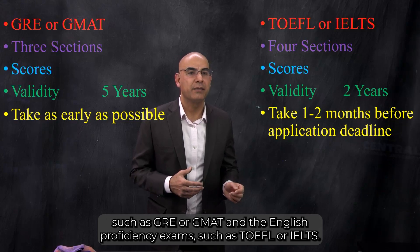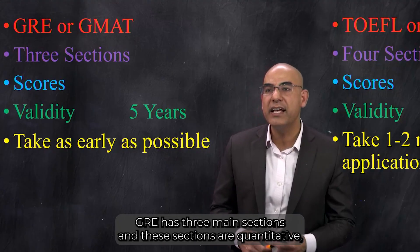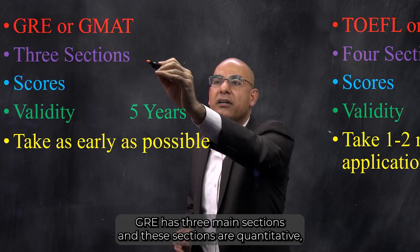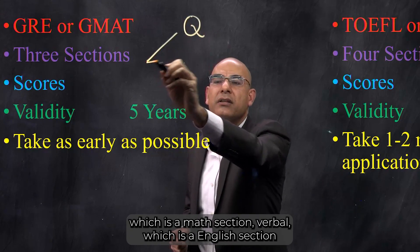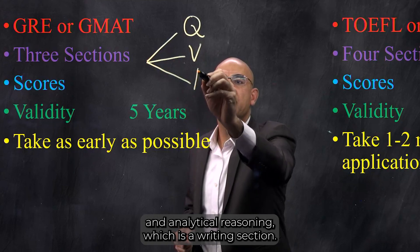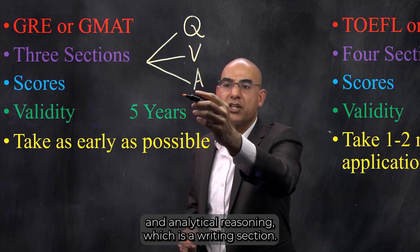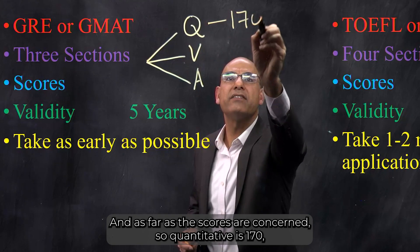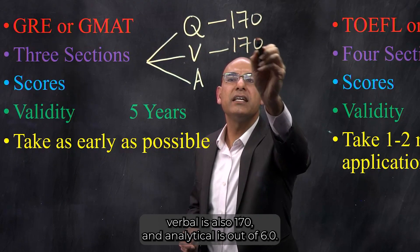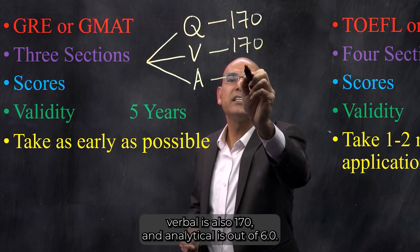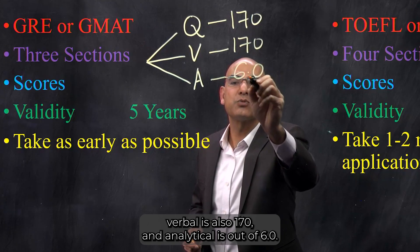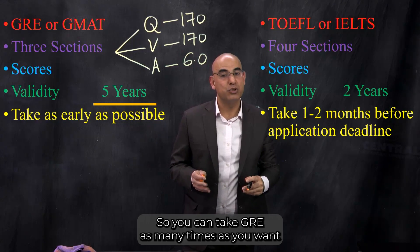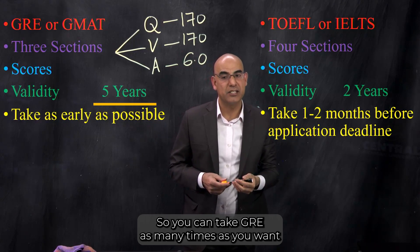Now let's talk about some of the standardized exams such as GRE or GMAT. GRE has three main sections: quantitative, which is a math section; verbal, which is an English section; and analytical reasoning, which is a writing section. As far as scores are concerned, quantitative is out of 170, verbal is also out of 170, and analytical writing is out of 6.0. Remember, the validity of GRE is five years, and you can take it as many times as you want, as early as possible.